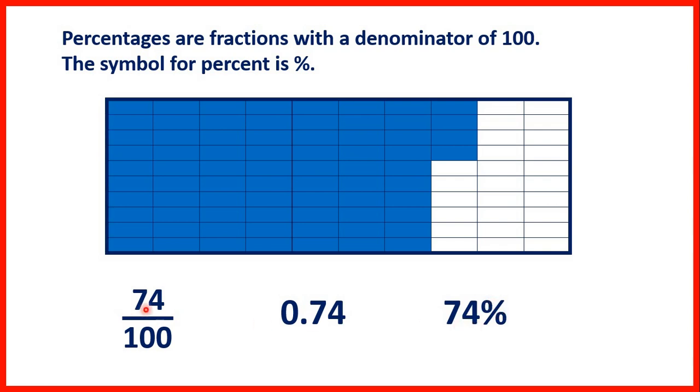Notice it's not 74 over 100 percent, because the percentage sign tells us that it has a denominator of 100. The percentage sign tells us that it's a fraction over 100.